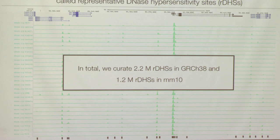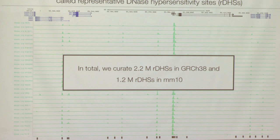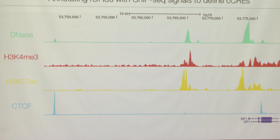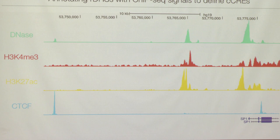We then go back and use those regions, layering on three other types of epigenetic signals. Red stands for promoter — H3K4me3. Yellow stands for enhancer — H3K27ac. And blue stands for insulator — CTCF. We promote those RDHSs further supported by these additional data types to candidate cis-regulatory elements, or CCREs.